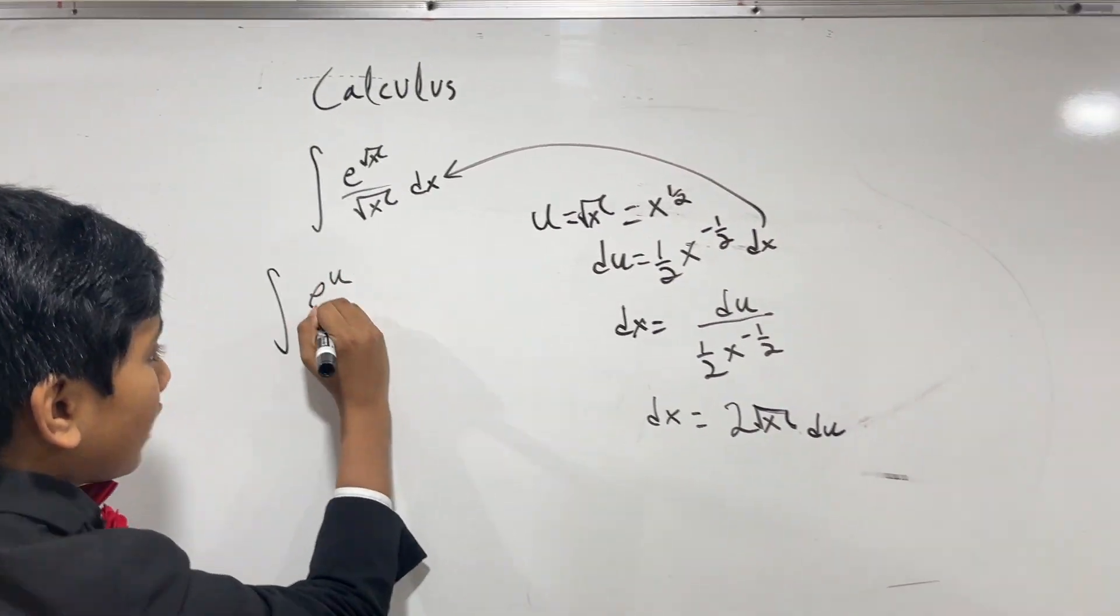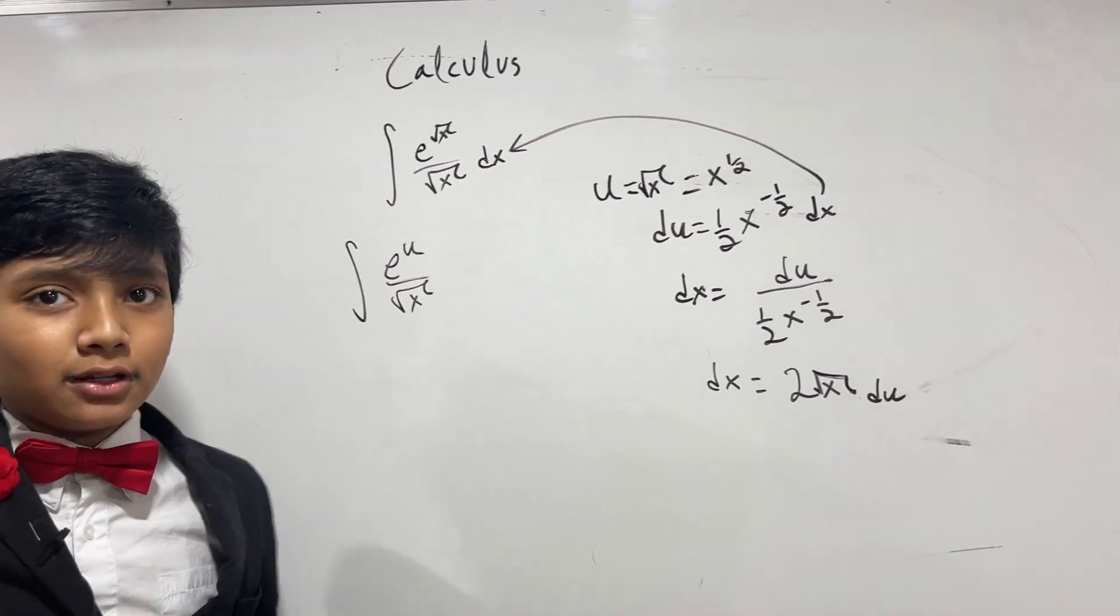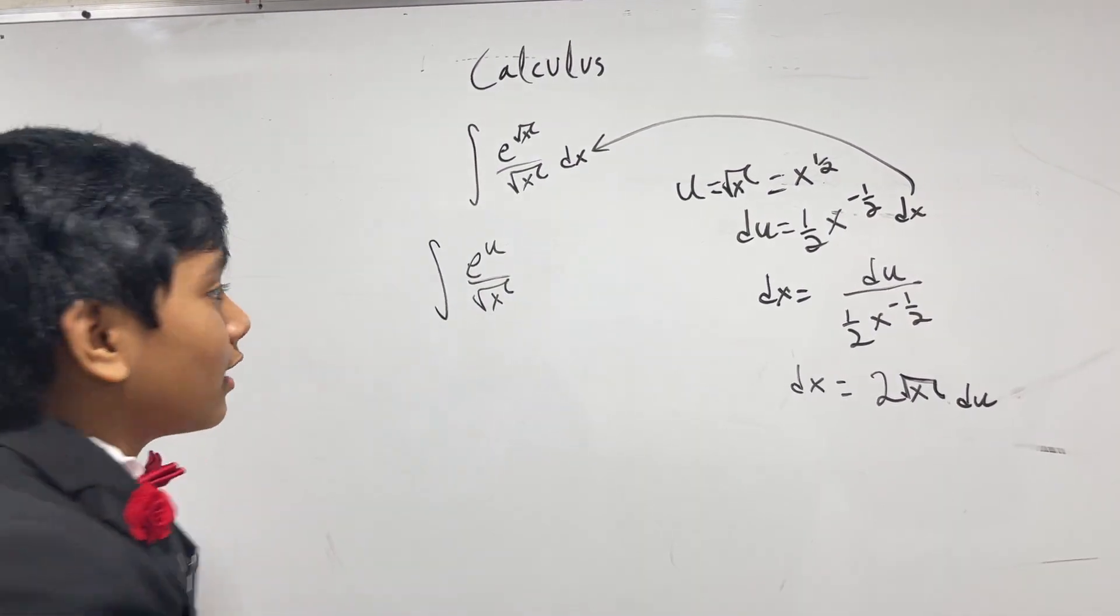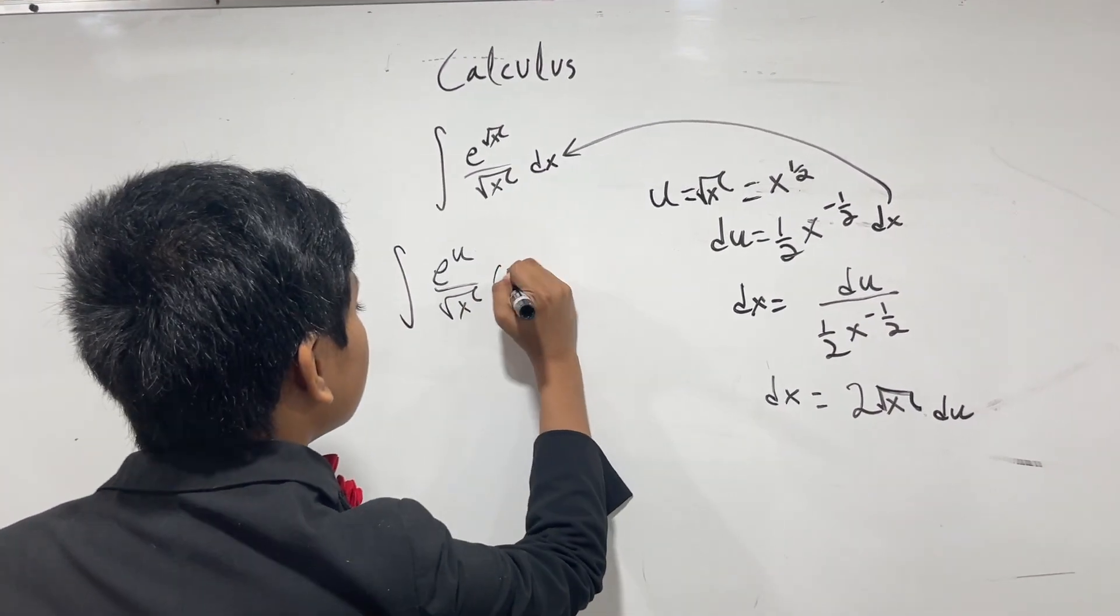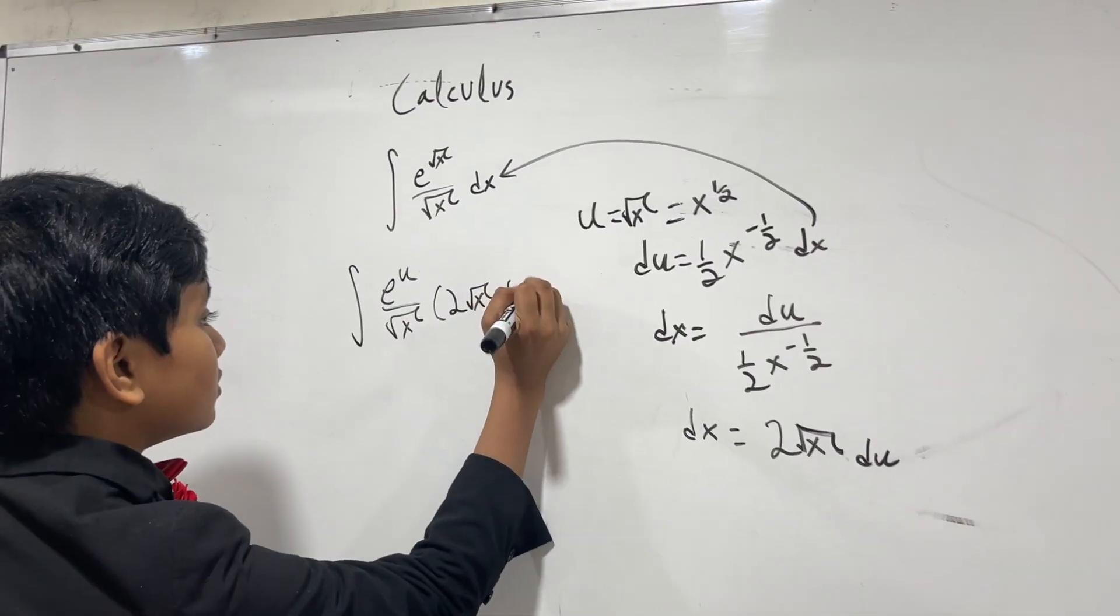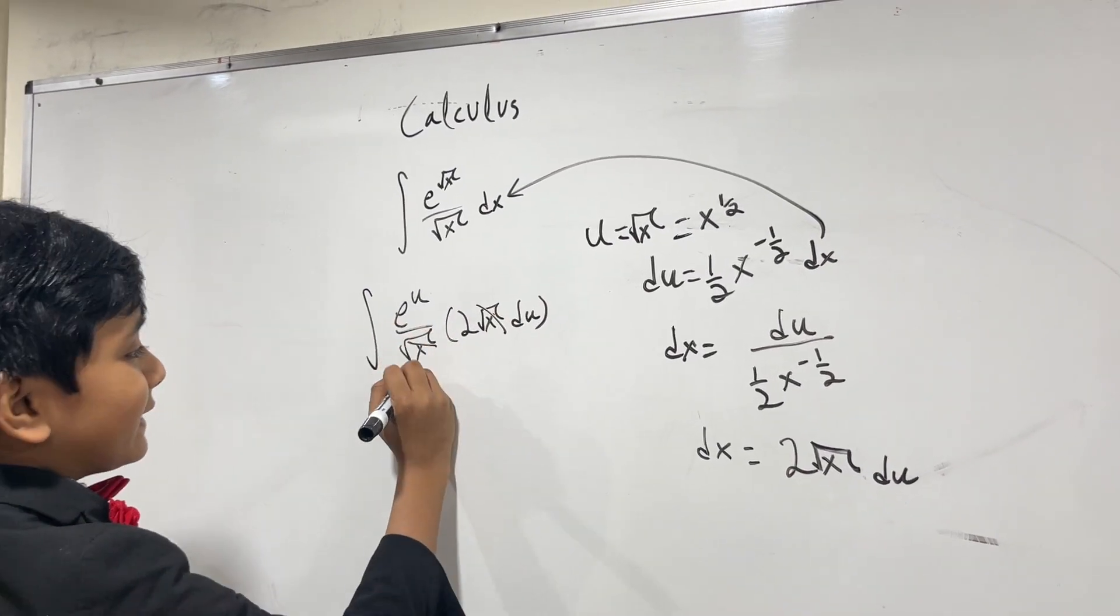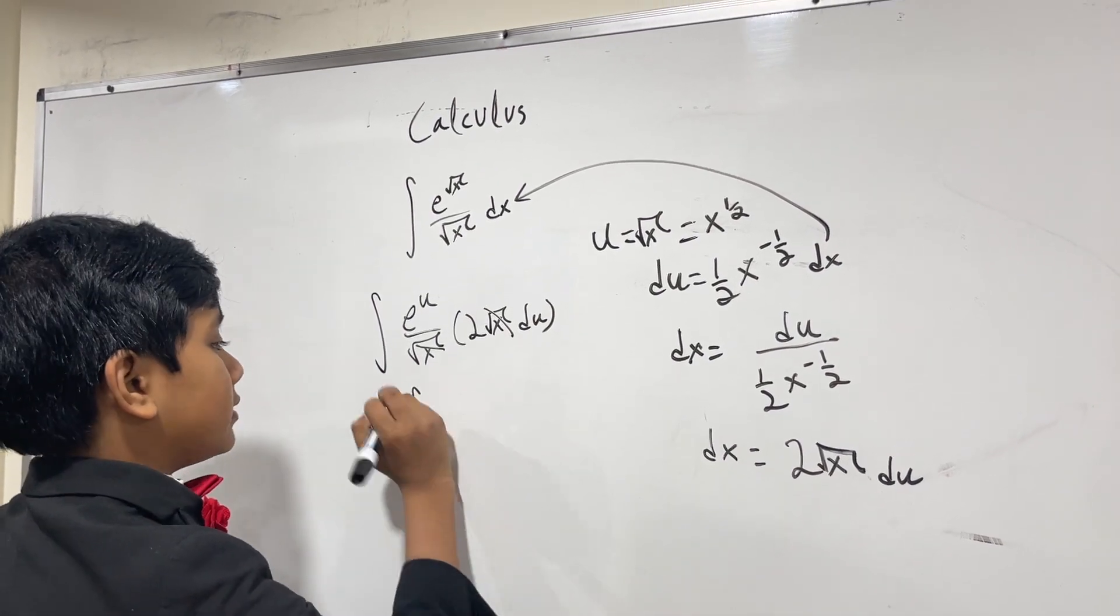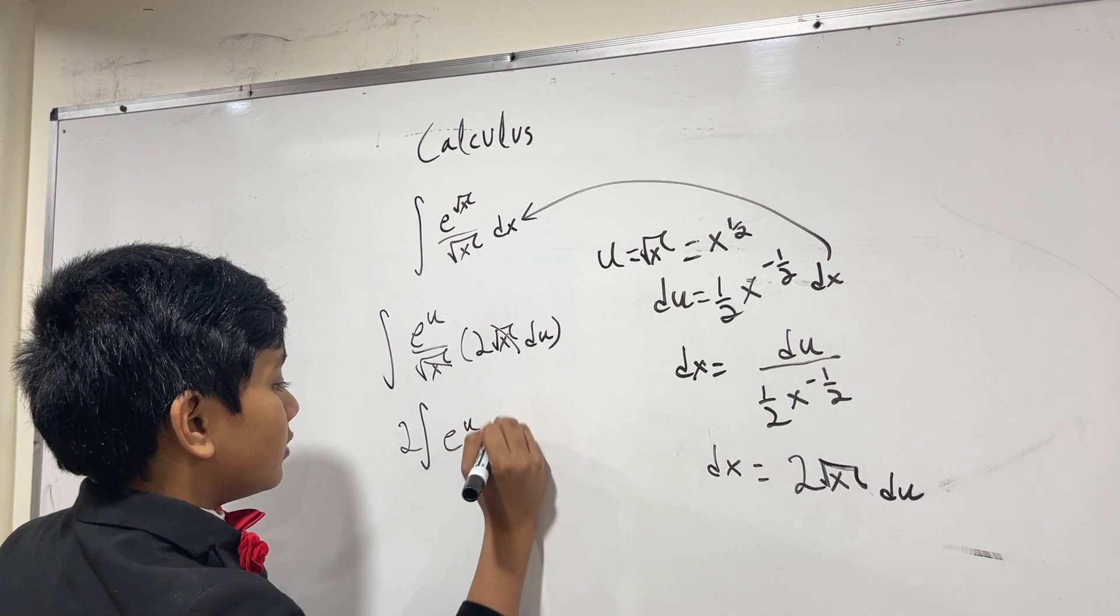8 du over root x. Yes, I know, this is illegal, because we didn't plug in the u over here. Whatever. 5 times 2 root x du. Cancel, Manson! Okay. So, now we just have 2 eu, or we can just put the 2 outside, eu du.